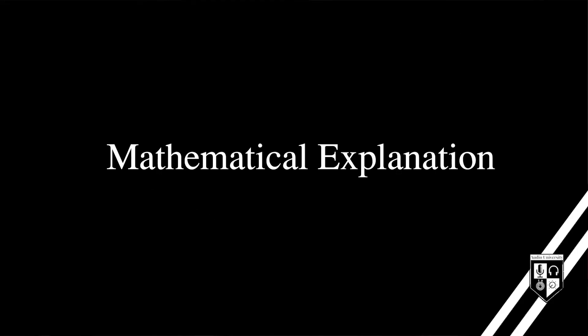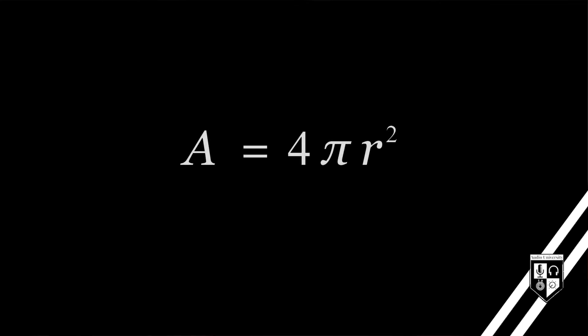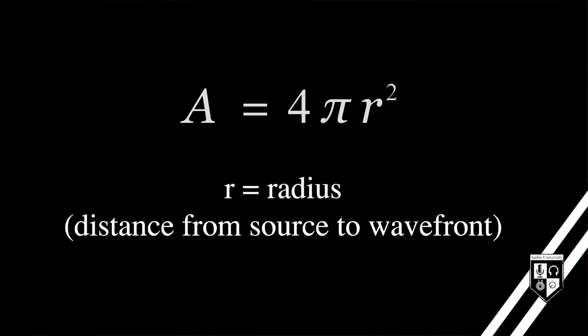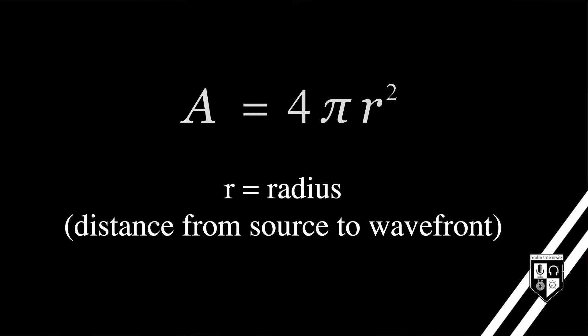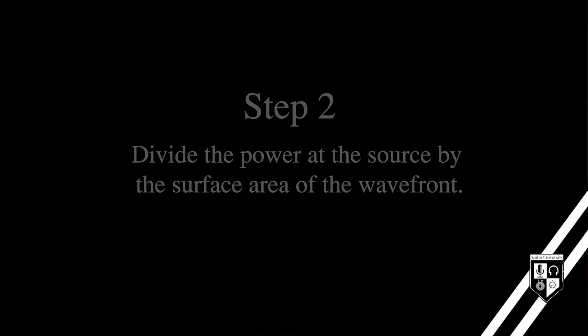If you prefer to learn with mathematical formulas, this section is for you. To calculate the energy loss, we first need to know the area of that sphere. The formula used to find the area of a sphere is 4πr². In this formula, r represents the radius of the sphere, or the distance from the sound source to the wavefront. To find the intensity at a given distance away from the sound source, divide the power at the sound source by the surface area of the wavefront.